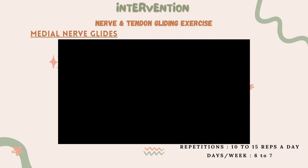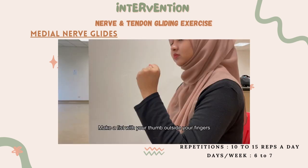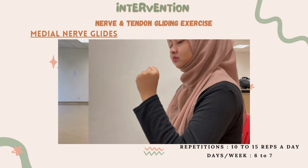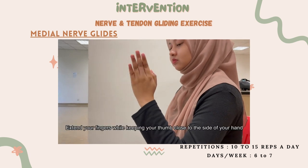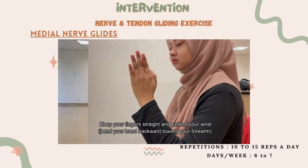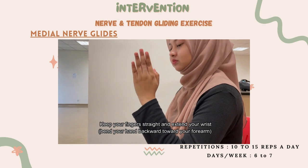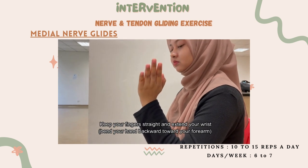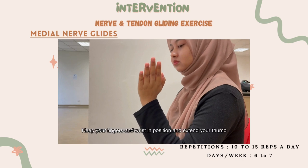The third step for this exercise is median nerve glides. First, make a fist with your thumb outside your fingers. Extend your fingers while keeping your thumb close to the side of your hand. Keep your fingers straight and extend your wrist, bending your hand backwards with your forearm.